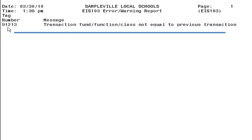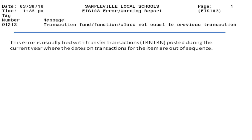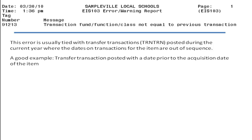It will display the tag number and then a description of the error. This video will cover the third type of error that may be generated, which is transaction fund function class not equal to previous transaction. This error is usually tied with a transfer transaction where the dates on the transactions for the item are out of sequence.